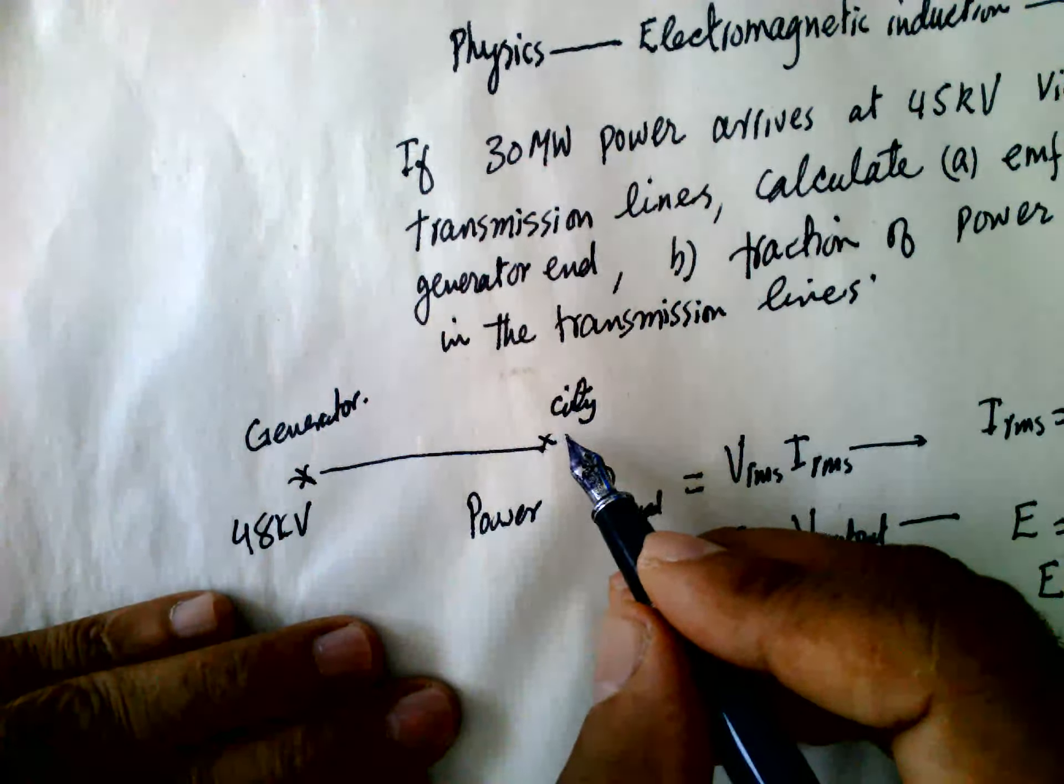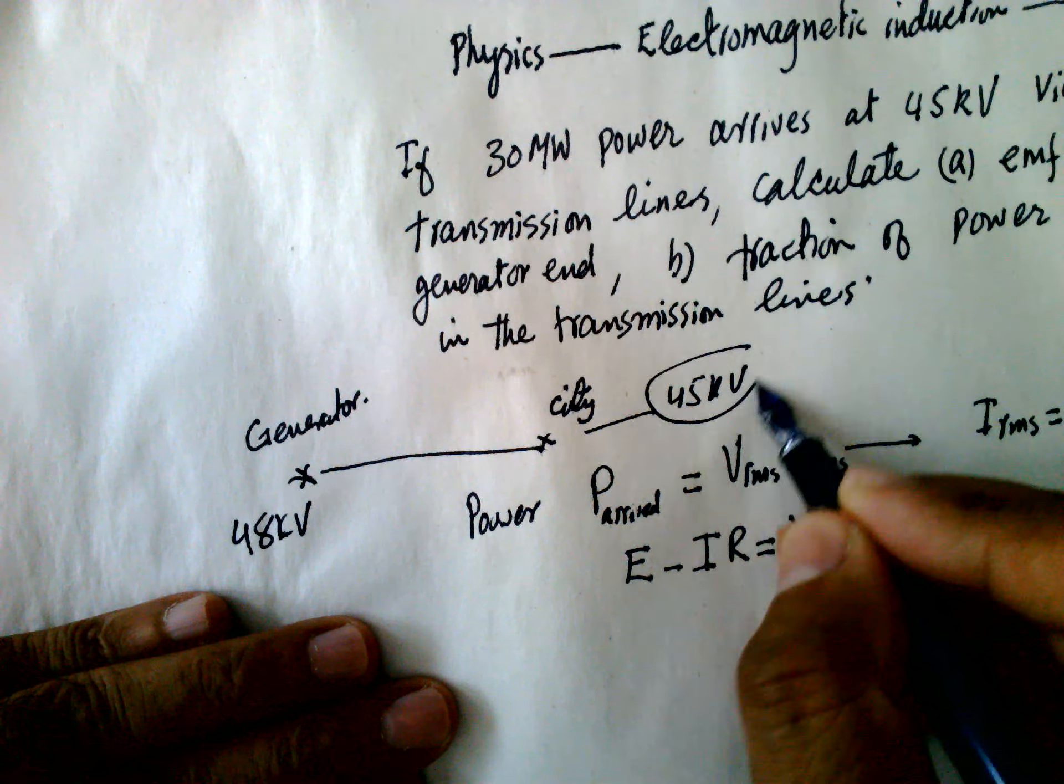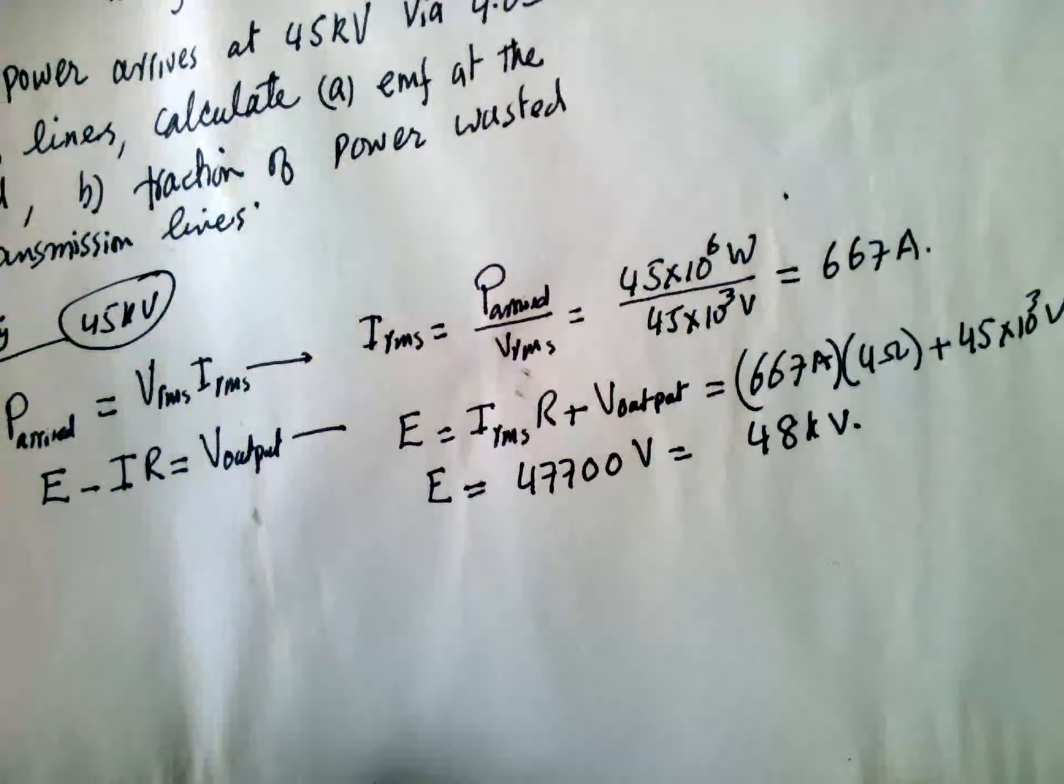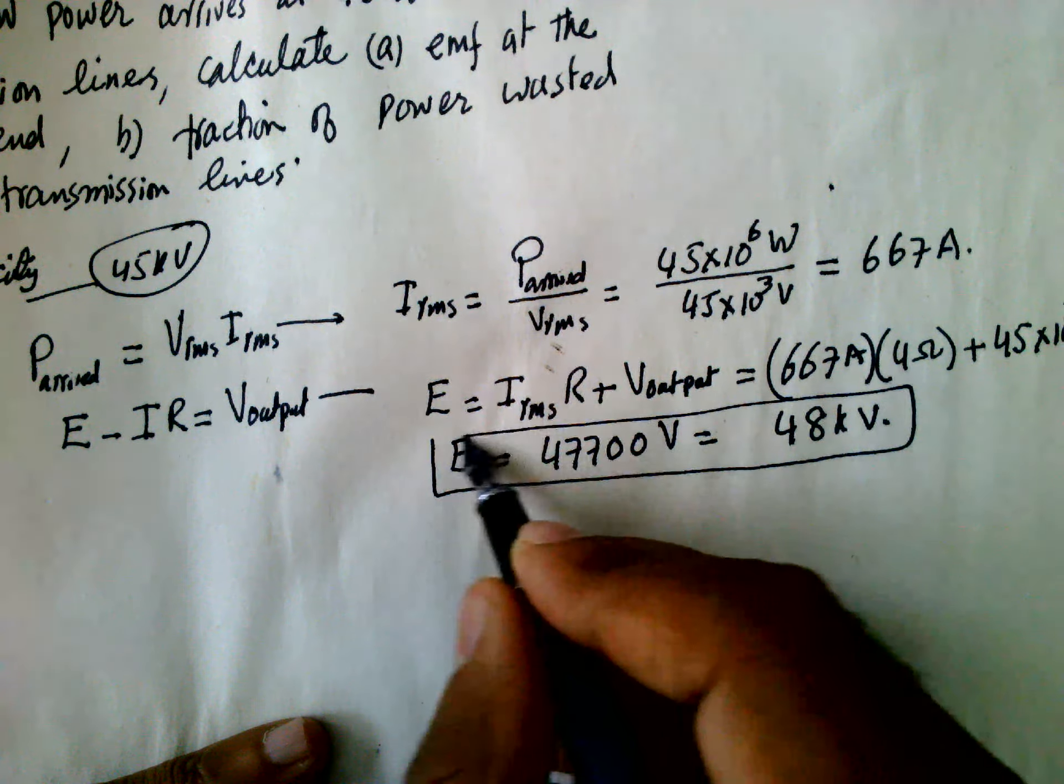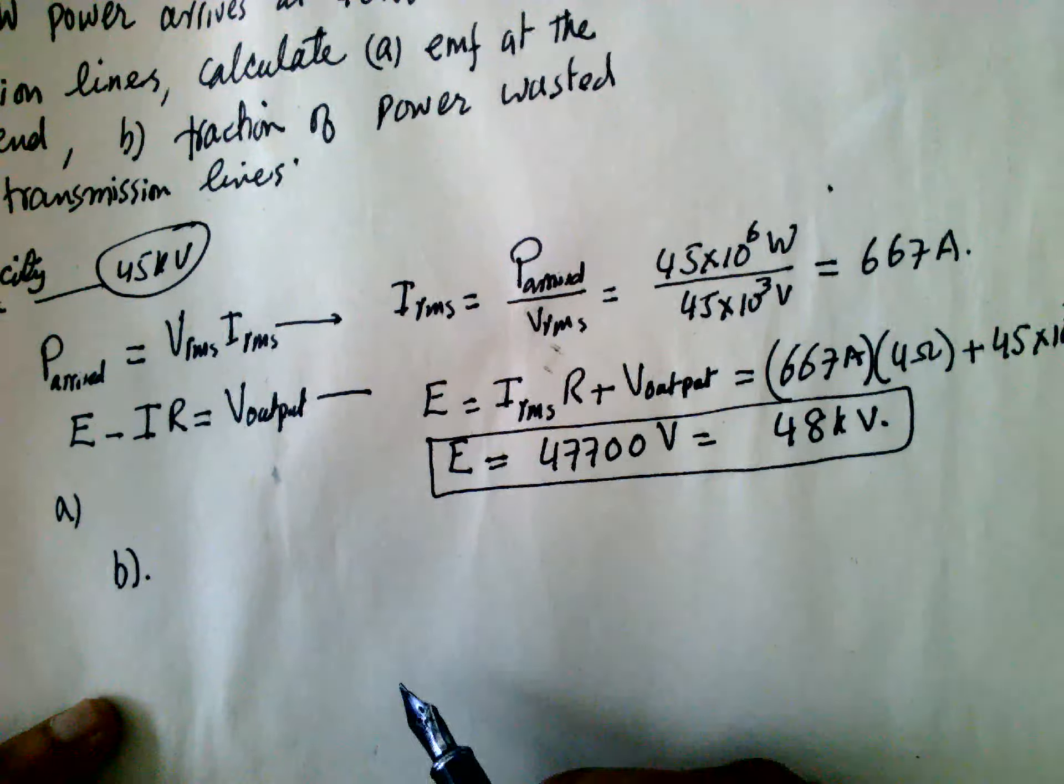So at the generator it's 48 kilovolts and at the city it's 45 kilovolts. So that is the answer to question (a). Question (b).